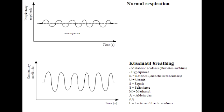What is Kussmaul breathing? Kussmaul breathing is a deep and labored breathing pattern often associated with severe metabolic acidosis, particularly diabetic ketoacidosis, but also can happen with renal failure.